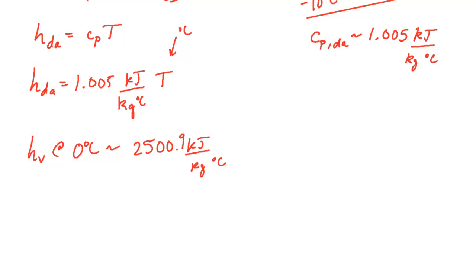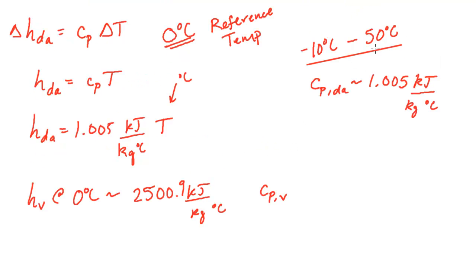And the CP of the vapor in this temperature range, this negative 10 to 50 degrees C, that is about 1.82 kilojoules per kilogram degree C.